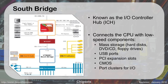The South Bridge is also known as the Input/Output Controller Hub. It's what's going to talk with things that are slower, like hard drives, CD drives, floppy drives, your keyboard, your mouse, your USB ports — those are considered slow. Your X1 and X4 PCIe cards are slow, relatively. Your CMOS, which is part of the BIOS, your port clusters — all of this input/output stuff is what's going to be handled through the South Bridge.